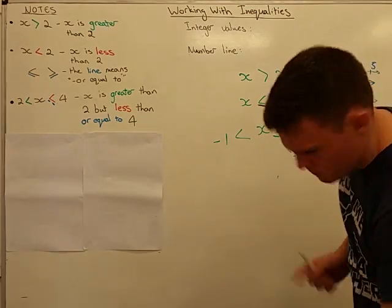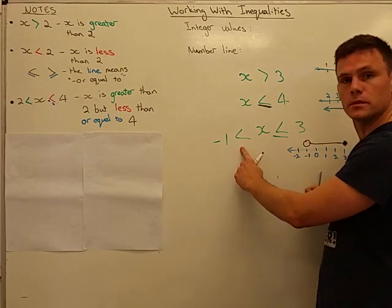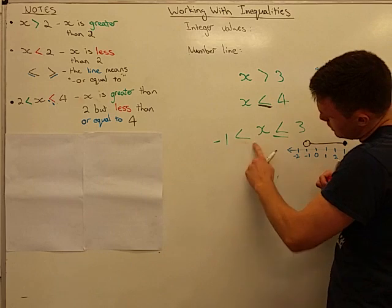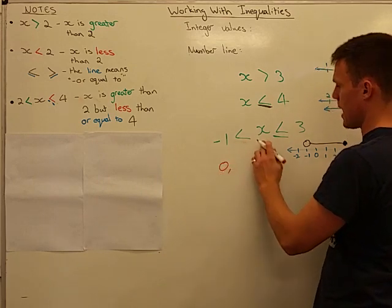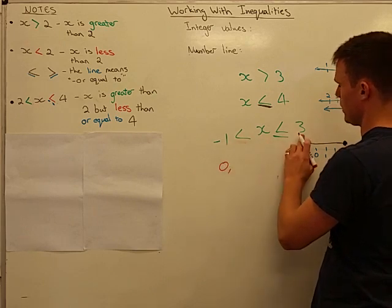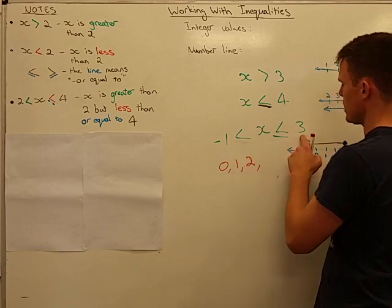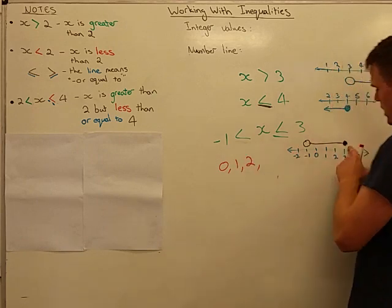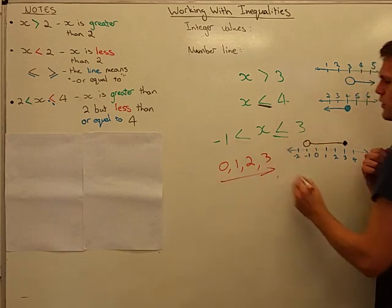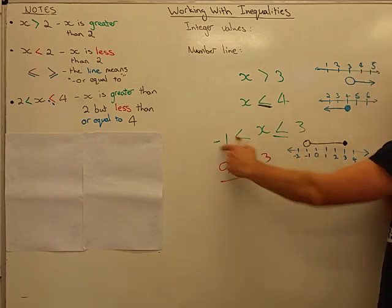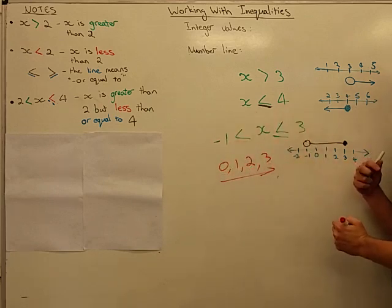So all we do is we start at my lowest point. Could x be negative 1? No, it can't. It can't be negative 1 because it doesn't have a little line underneath here. So x can't be negative 1. Therefore, if we go up in whole numbers, the next number is 0. It can be 0, because 0 is between negative 1 and 3. Can it be 2? Can it be 1? Yes. Can it be 2? And then I get to 3, which is pretty much my upper boundary here. But can it be 3? Yes, it can. So my integer values for x, represented by this inequality, could be 0, 1, 2 or 3. And those are the two main ways.